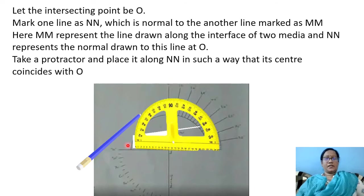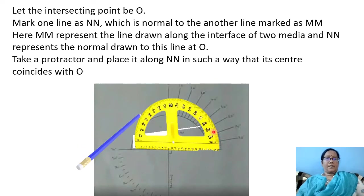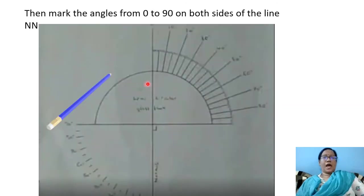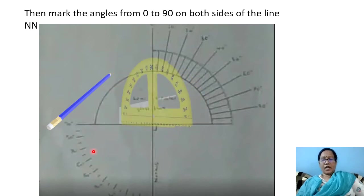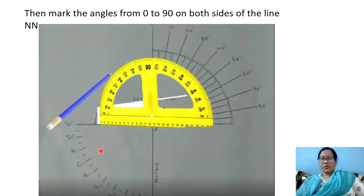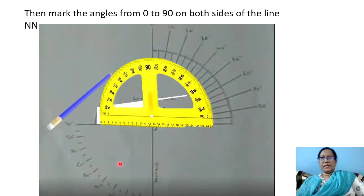NN represents the normal drawn to this line at O. This is NN and this is MM. This side is air and this side is the glass slab. Take a protractor and place it along NN such that its center coincides with O. Mark the angles from 0 to 90 degrees on both sides of NN, and repeat the same on the other side. The angles should be represented as curved lines.